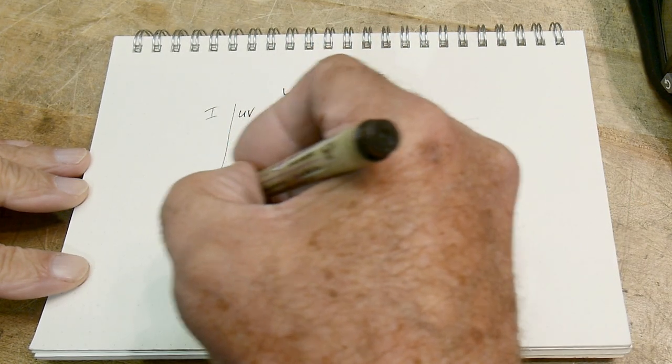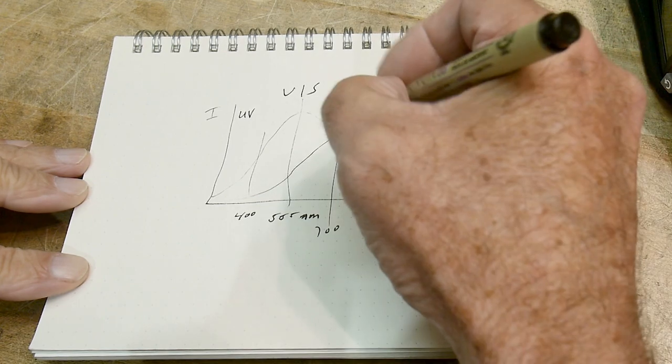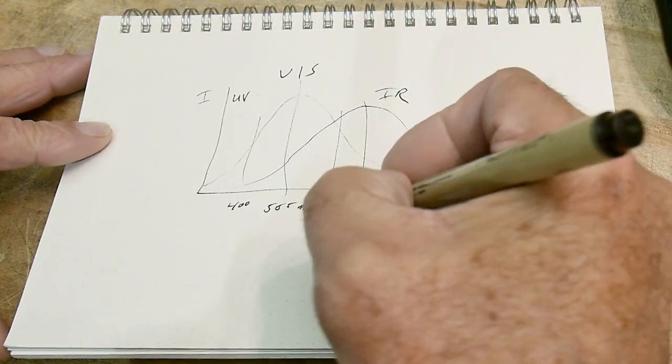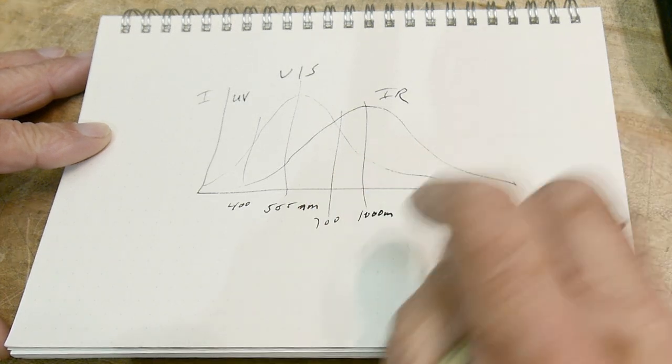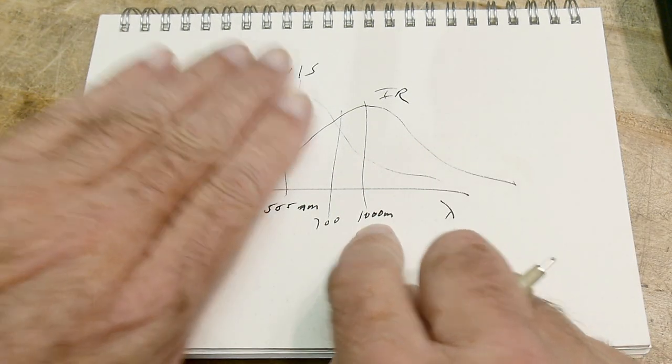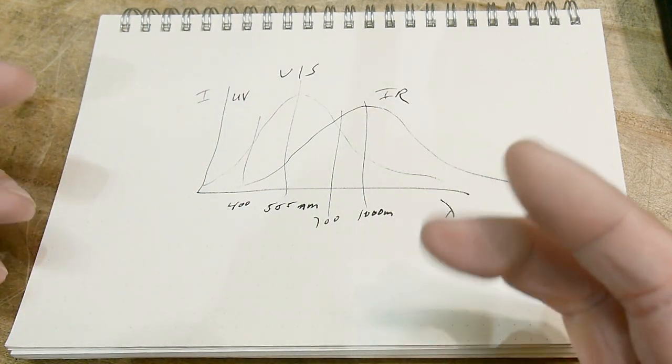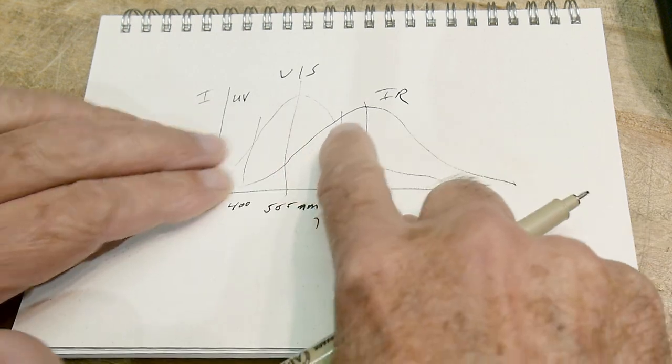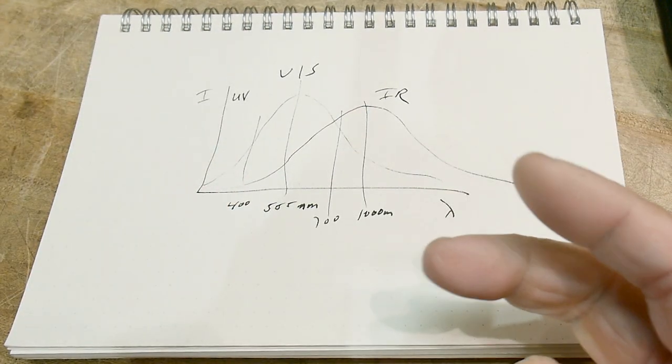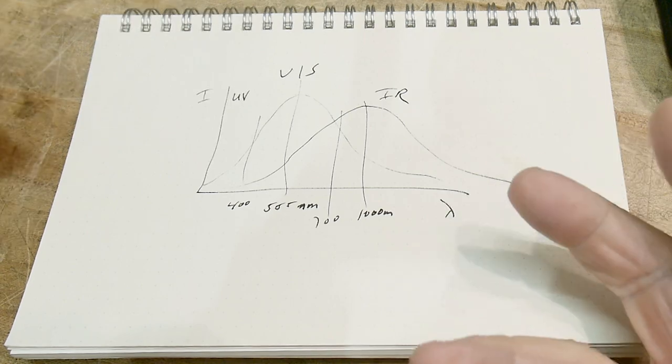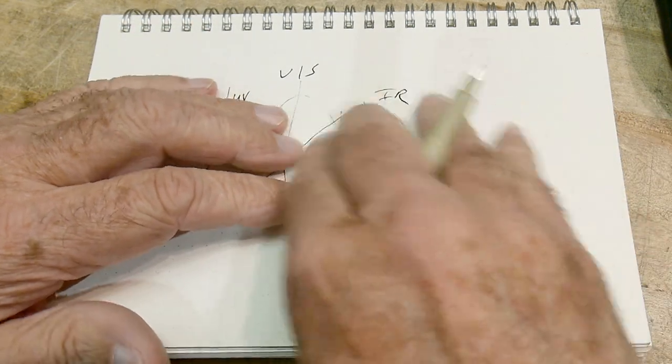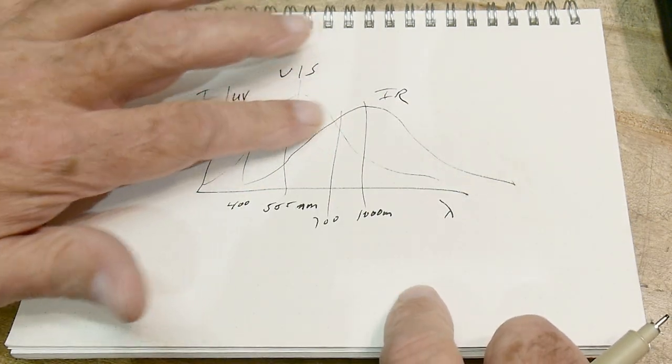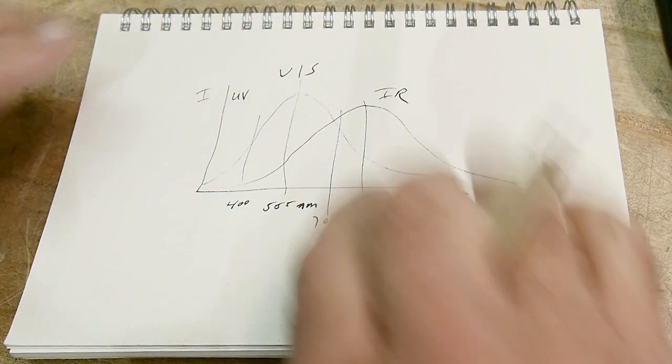What about a tungsten light bulb? It has a curve that's longer, with a peak around a thousand nanometers. That's above what we can see, so tungsten light bulbs actually generate more heat than visible light. That's why LED technology is really good - you're not wasting energy as heat, you're putting it into the visible spectrum.